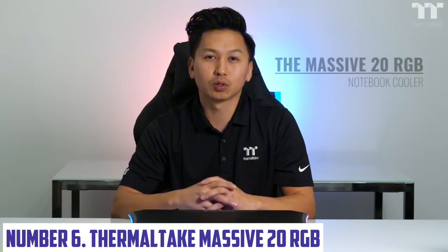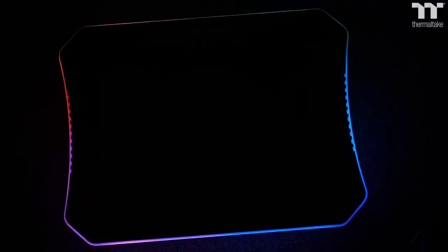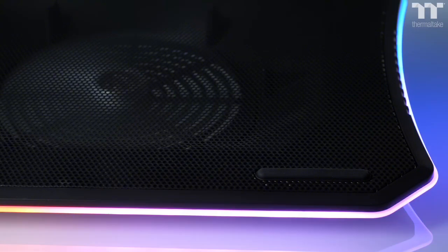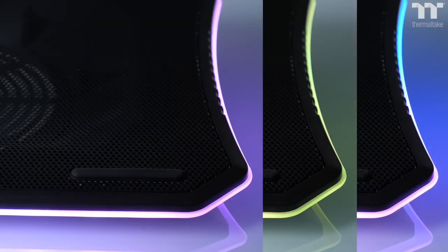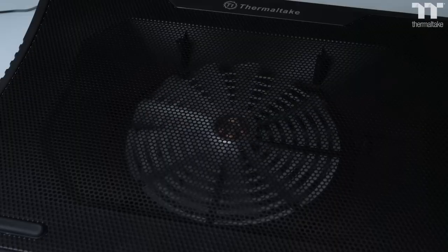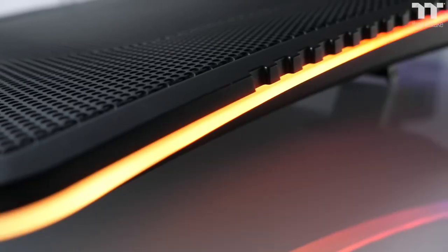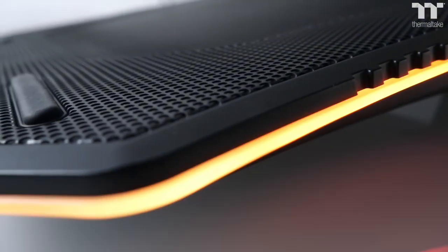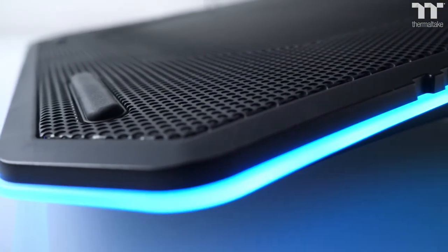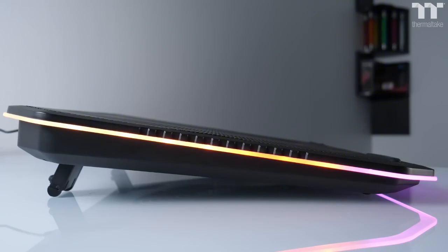Number 6. Thermaltake Massive 20 RGB. Take your PC to the next level with the Thermaltake Massive 20 RGB, a behemoth of a CPU cooler that packs a punch. Designed for extreme performance, this massive cooler is built to keep even the most demanding systems running smoothly. With its Massive 20 heat pipe design, it's capable of handling high wattage processors and delivering unparalleled cooling efficiency. The Massive 20 RGB is not just about performance, it's also a statement piece. Its sleek and modern design features a mesmerizing RGB light show that can be customized to match your system's unique style.